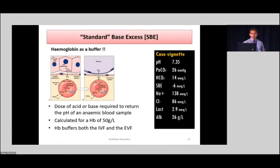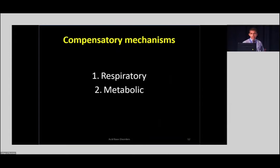Most blood gases show both values. I would advise you to go by the standard base excess because it is corrected to standardized numbers. Then we come to the compensatory mechanism. We know there is a predominant acid-base disorder — whether acidosis or alkalosis — and according to whatever the abnormality, you need to have a compensatory mechanism.